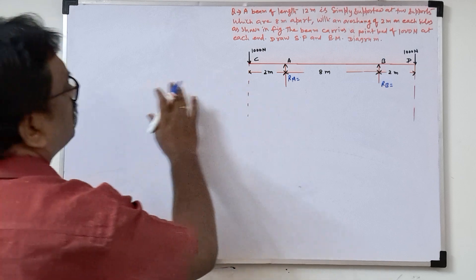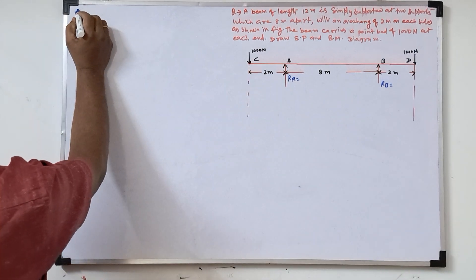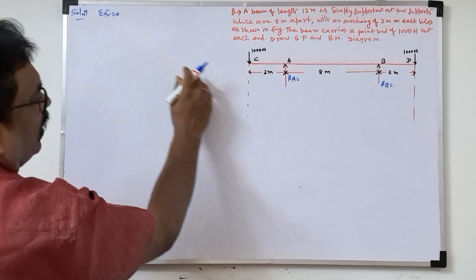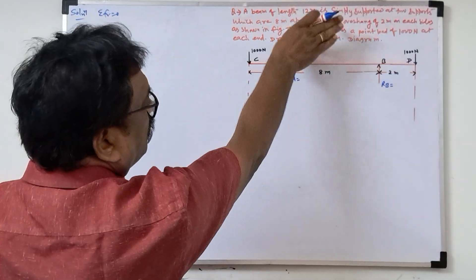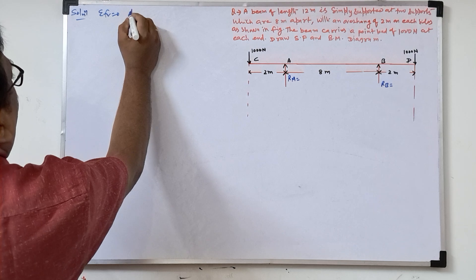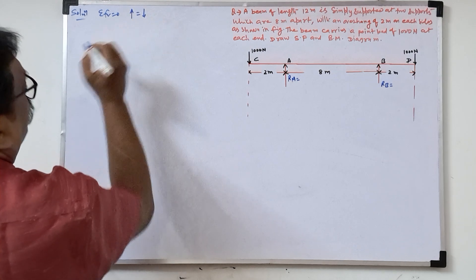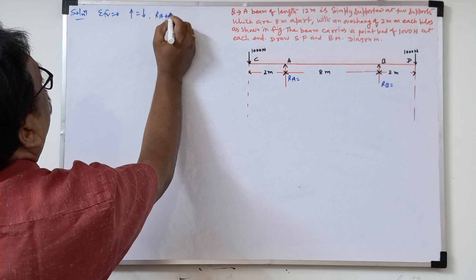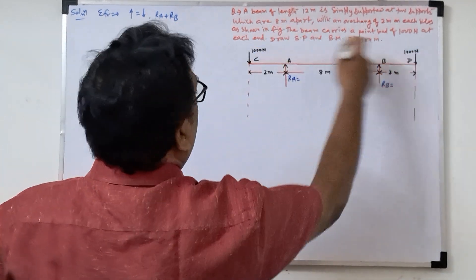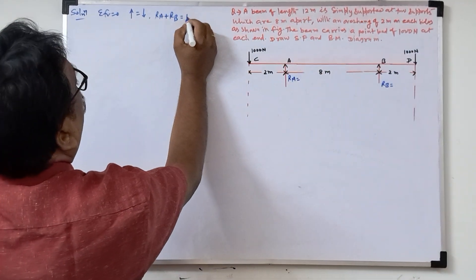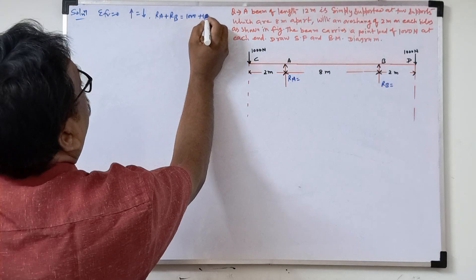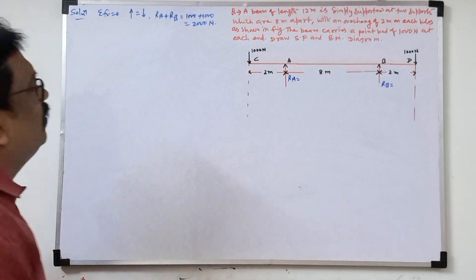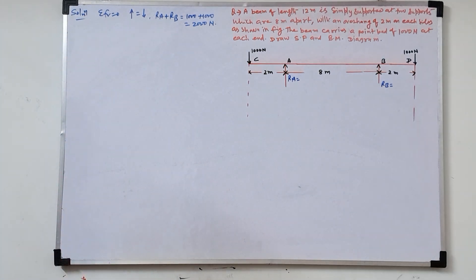To find the support reactions, we will use the equilibrium equation. First will be sigma Fy equal to zero. We will take total upward force equal to total downward force. Ra plus Rb is upward, then downward force: thousand plus thousand equal to two thousand Newton. If there will be kilonewton, you will write kilonewton; now they give Newton, so I wrote Newton.